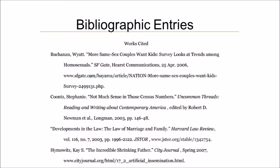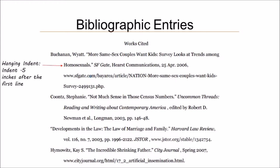The bibliographic entry is on an extra page at the end of the paper. This page is called the Works Cited page, and it's an alphabetical list of every source you got your facts, ideas, and quotes from for your paper. The Works Cited page is formatted with a hanging indent. The bibliographic entries give the reader all the information they would need to find your sources in a library or on the web if they wanted to look them up and read them.